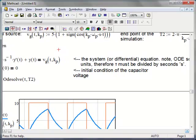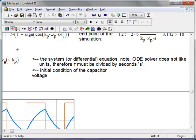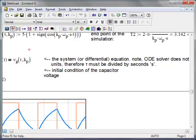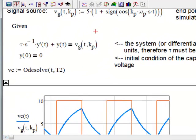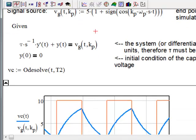So I put a note here. The ODE solver does not like units, therefore tau must be divided by seconds to render it unitless. But effectively, this is tau times the derivative of y plus y is equal to Vg, which is this time-varying signal that we are exciting, that's exciting the system. I specify an initial condition, and notice here, I do not assign y(0) equals 0. I use the Boolean equality, so that's control 0.